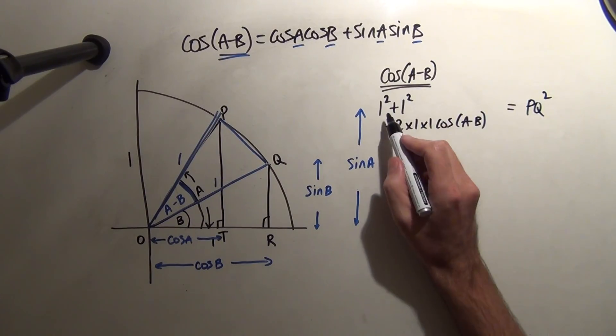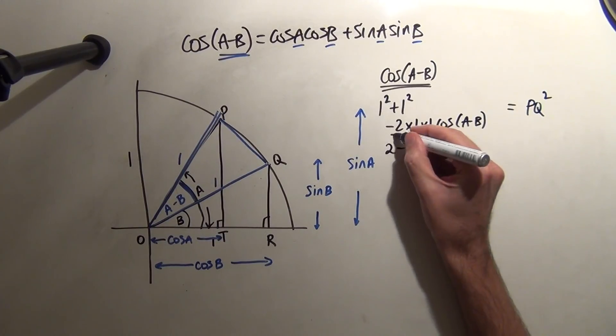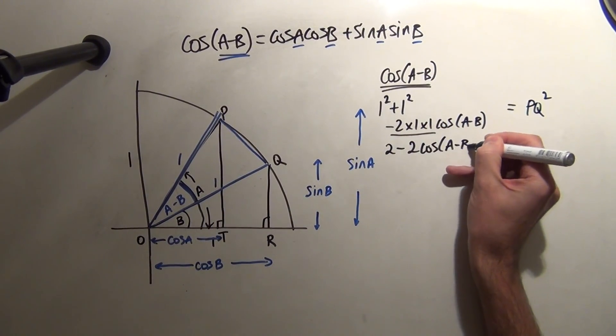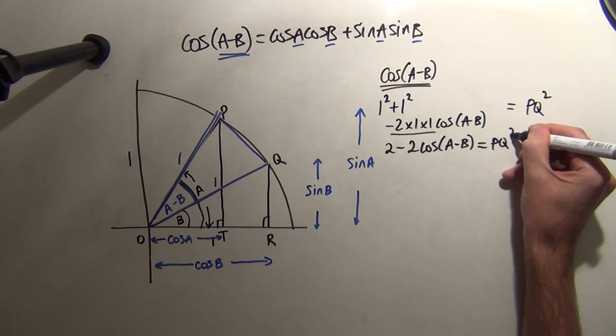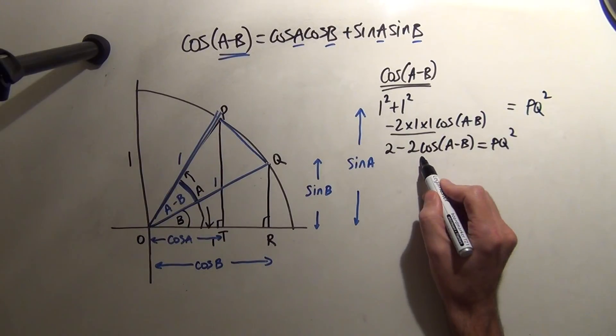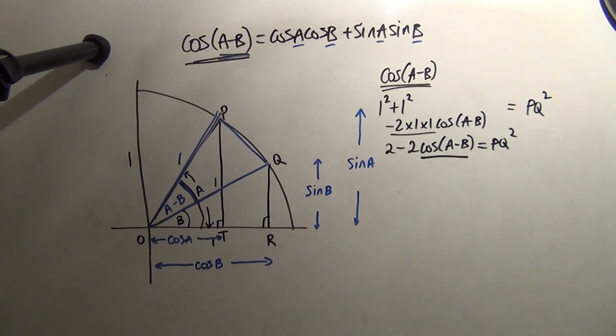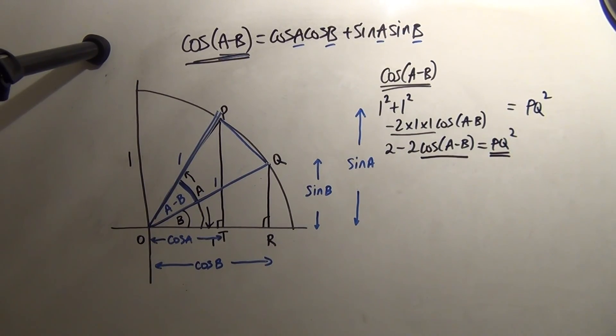That's one of the ways. 1 squared and 1 squared is 1 and 1, that's 2, minus 2cos(A-B) is PQ squared. Now, I'm getting somewhere, because there's a cos of A minus B now, which I have, which I didn't have before. But there certainly isn't a PQ squared in this formula.